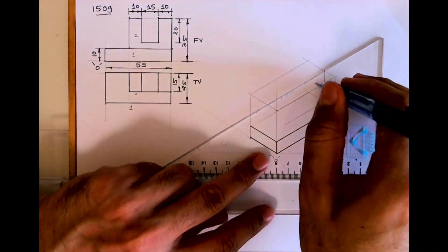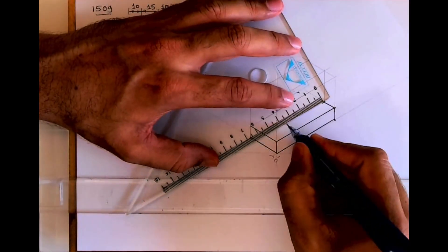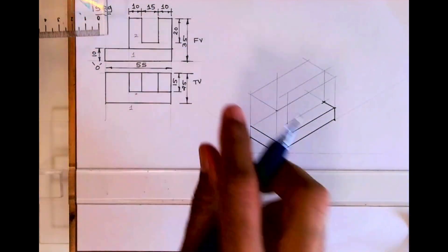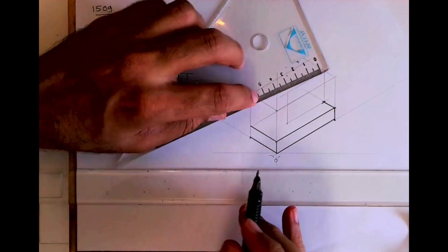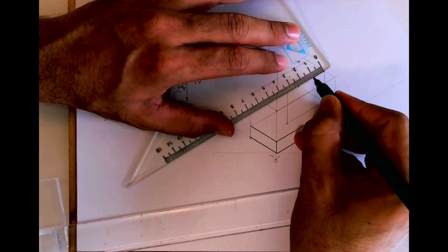And from here 35, so I'll mark 35. Then I will draw this U shape. You can see 10, 10 on both the sides.